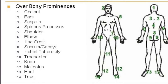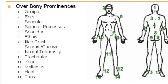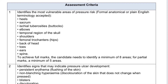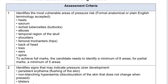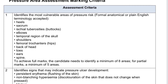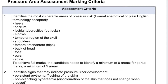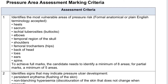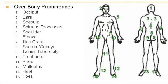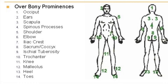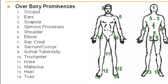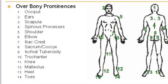The most vulnerable areas of pressure risk are: heels, sacrum, ischial tuberosities (also called buttocks), elbows, temporal region of the skull, shoulders, femoral trochanters (hips), back of the head, toes, ears, and spine. To achieve full marks, a candidate needs to identify a minimum of eight areas; for partial marks, a minimum of five areas.